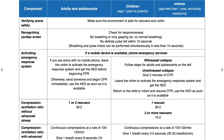Check for breathing and check for a pulse for 5 to 10 seconds. If there is no breathing or no pulse, immediately activate your local emergency system. If a mobile device is available, phone the emergency services and put your phone on hands-free mode. If you are alone with no mobile phone, leave the adult victim to activate the emergency response system and get the AED before beginning CPR. Otherwise, send someone and begin CPR immediately, and use the AED as soon as it's available.